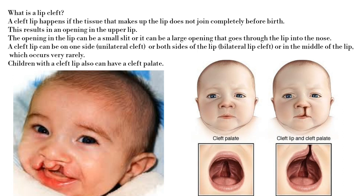The opening in the lip can be a small slit or a large opening that goes through the lip into the nose. A cleft lip can be on one side (unilateral cleft), both sides of the lip (bilateral lip cleft), or in the middle of the lip, which occurs very rarely. Children with a cleft lip can also have a cleft palate.